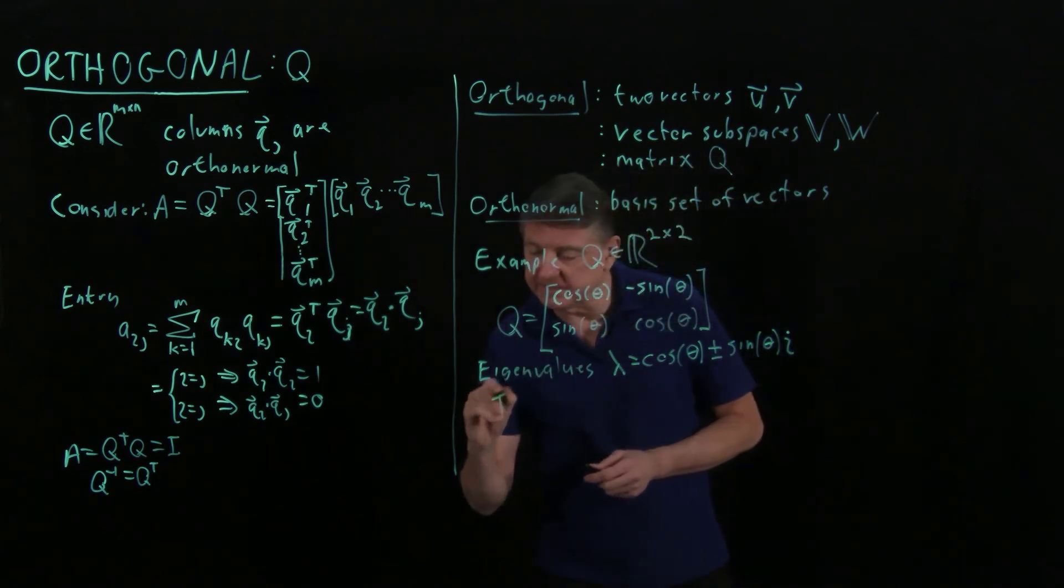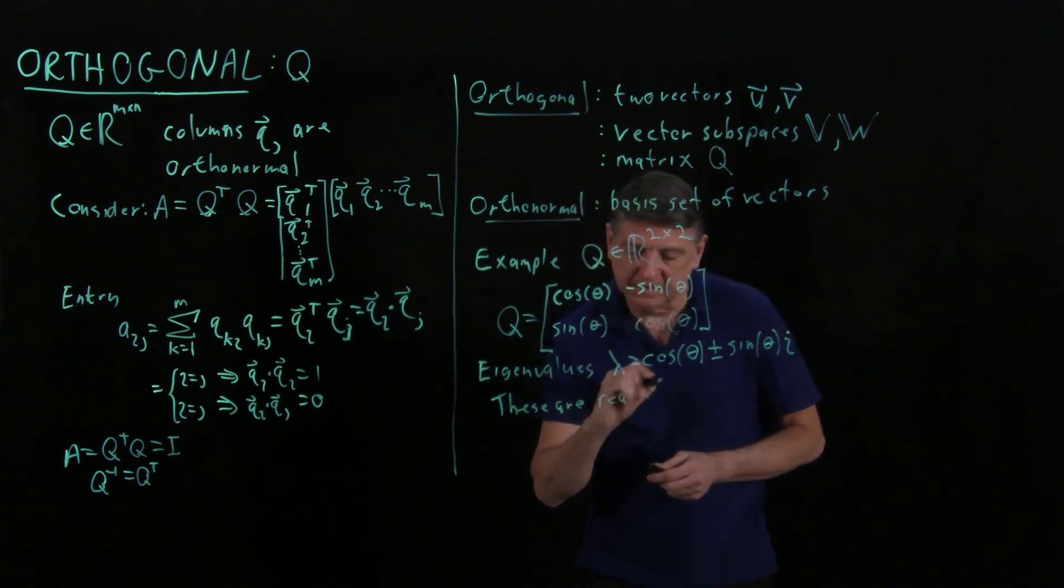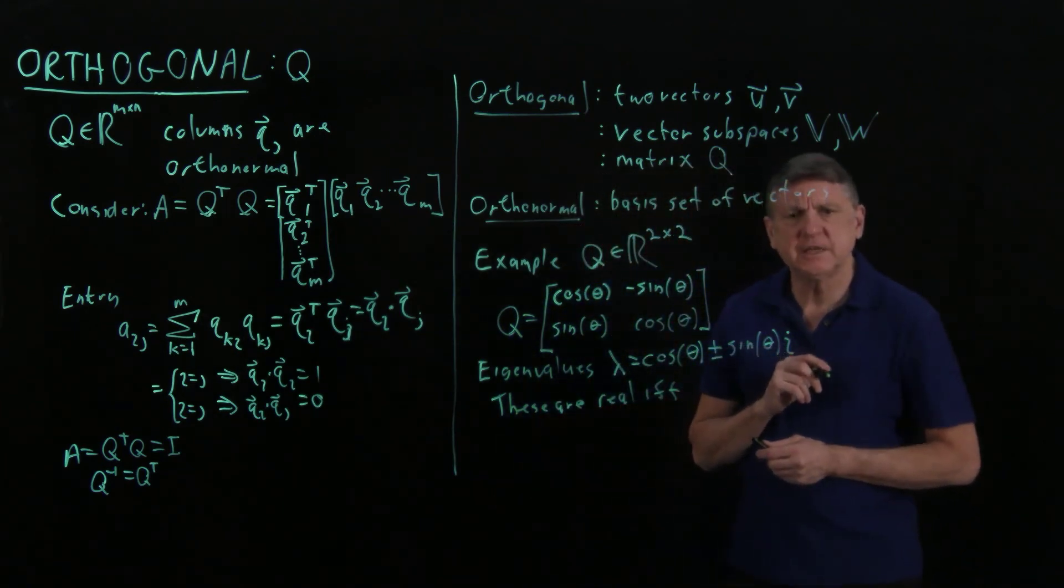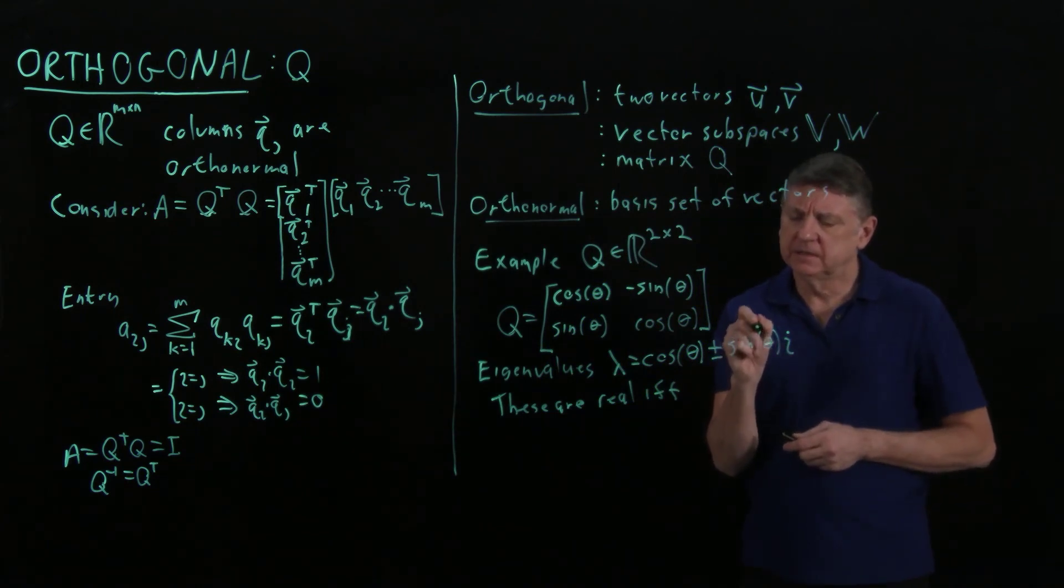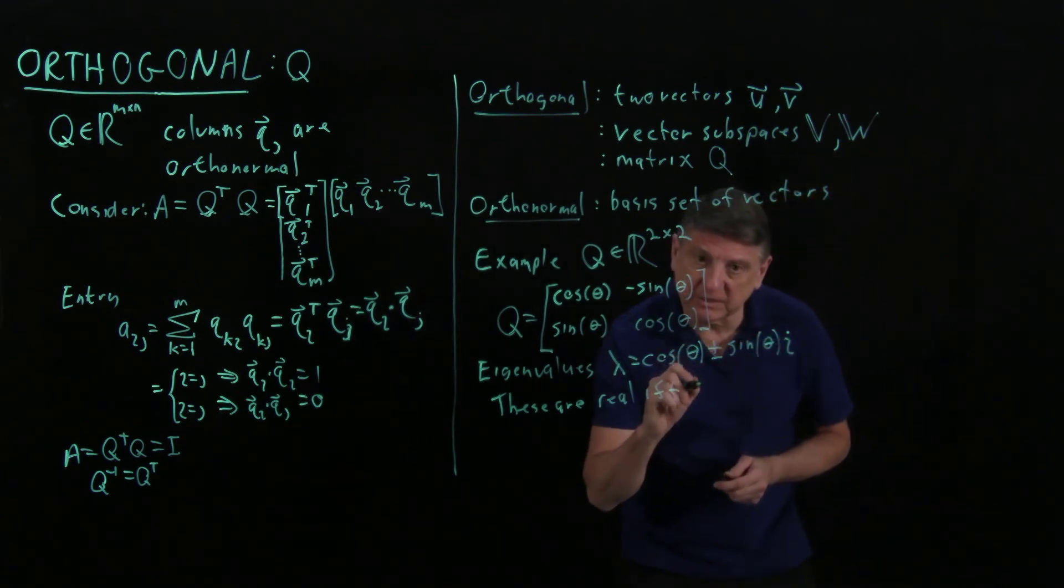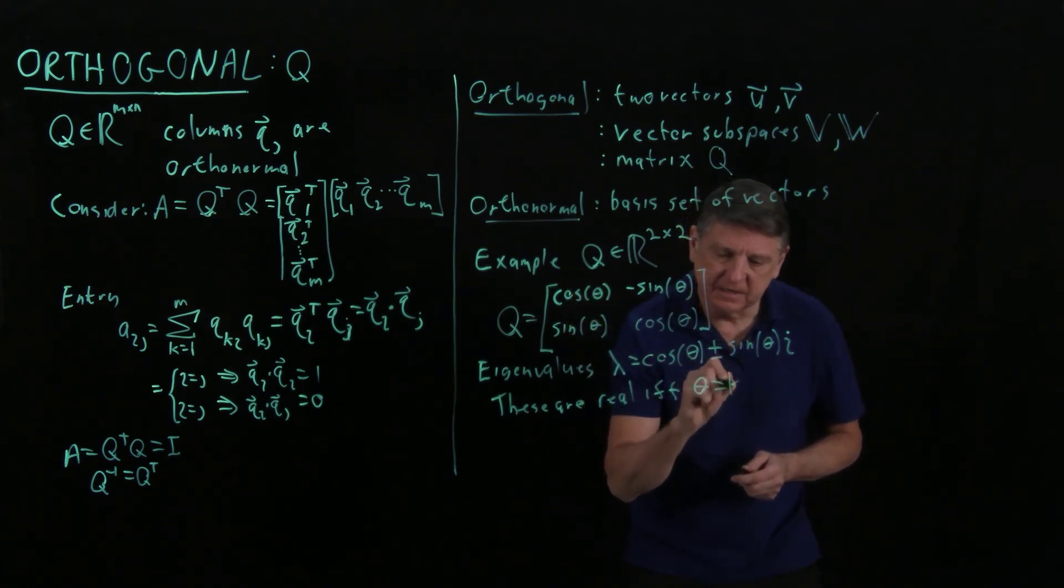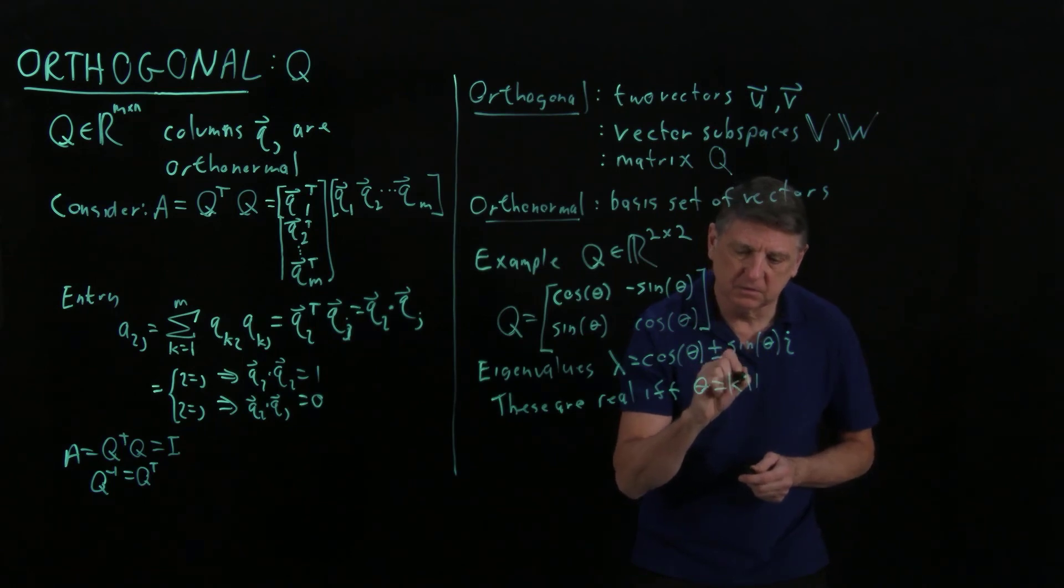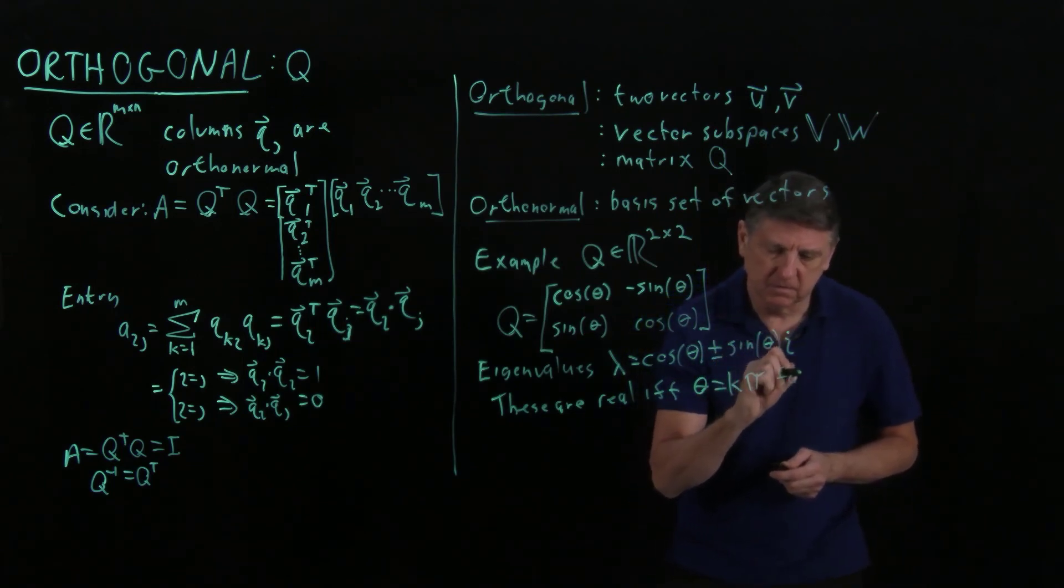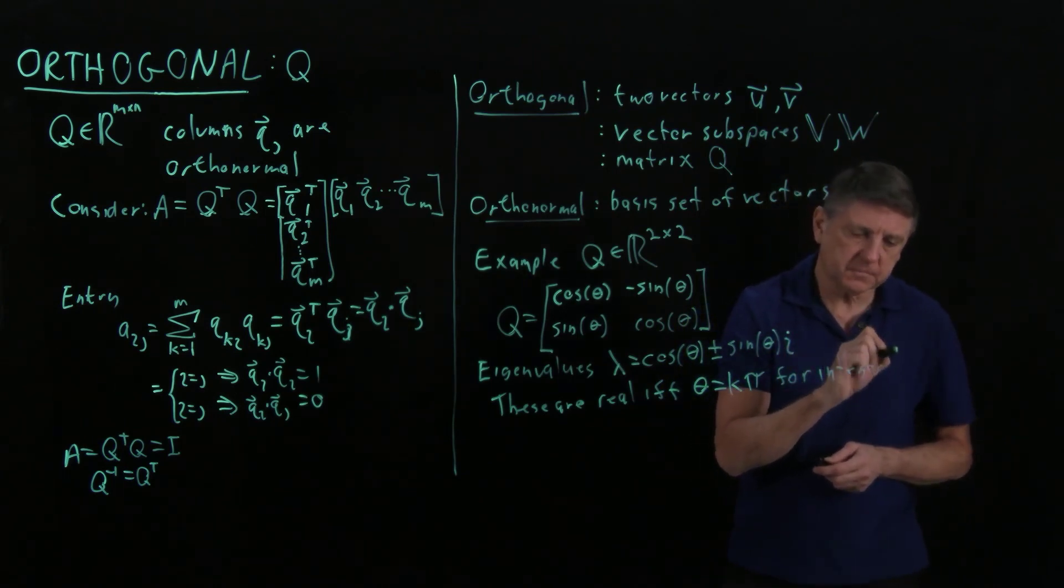And we can observe that these are real if and only if. So what's the condition there? Well, that would mean that the sine of the angle has to be zero, and that happens for zero, and pi, and 2 pi, and 3 pi, and minus pi. So that's if and only if that angle that's encoded inside this vector is k times pi for an integer k.